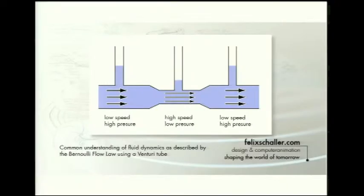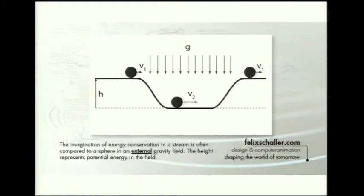This idea is based on Bernoulli's research on pressure tubes, where there is a small cross-section in between, and therefore to maintain mass continuity, the speed has to go up. By that acceleration, measurement shows a lower static pressure. This understanding comes from mechanics like a mass on a ramp in a gravity field, where decreasing potential height converts potential energy into speed.